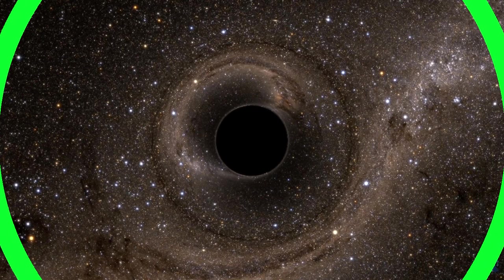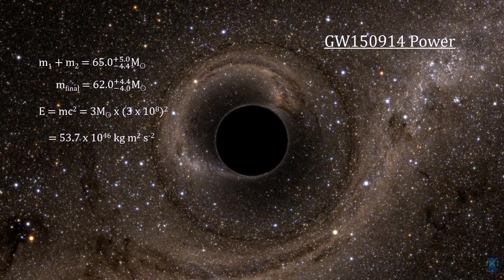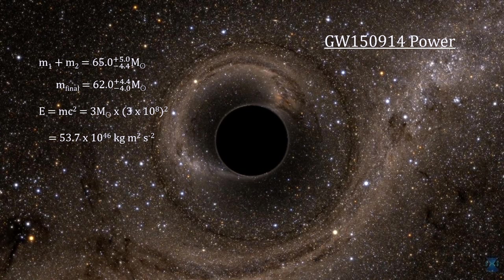Modeling the final ring-down shows that the mass of the resulting Kerr black hole is around 62 solar masses. That's three solar masses less than the sum of the masses of the two in-spiraling black holes. This mass was converted to the radiated gravitational energy.